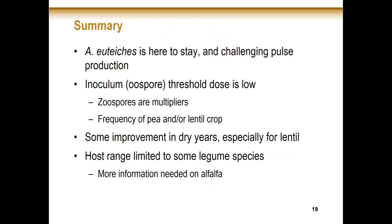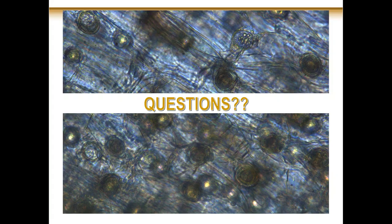To wrap up on Aphanomyces — we all know that Aphanomyces is here to stay and it's going to continue to challenge pulse production. There is a lot of research going on to find ways to best mitigate this situation. Part of what makes it such a challenging pathogen is because the threshold dose is low, because it relies on zoospores as the multipliers, and because we've had fields with a long history of pea and lentil crops. We do see some improvement in dry years, especially for lentil. The host range is limited to some legume species, and we're still working on the question of alfalfa. If you have questions, please send them to Sherilyn and we'll address them all at the end of the session.